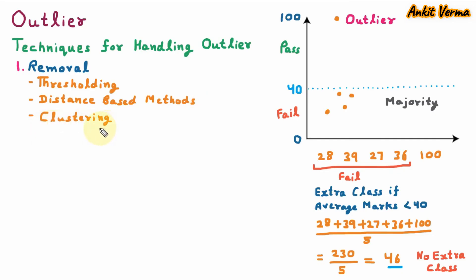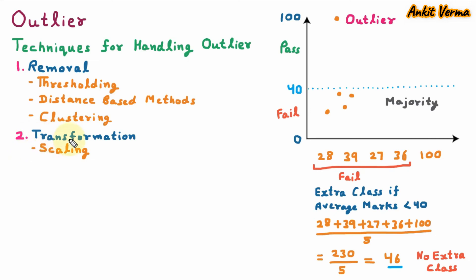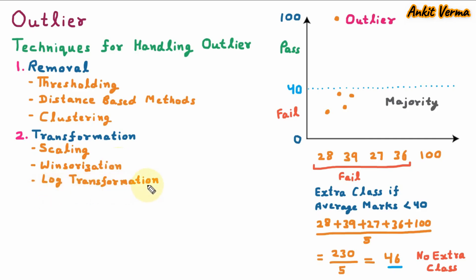Next is clustering — the data points which do not belong to any cluster are removed. The second category under techniques for handling outlier is transformation, where the data is transformed to reduce the influence of outlier. Under transformation, the first is scaling — the data is normalized to have a mean of 0 and standard deviation of 1. Next is winsorization — the value of outlier is replaced with the nearest non-outlier value. Next is log transformation — the log is applied and data is compressed to reduce the impact of outlier.